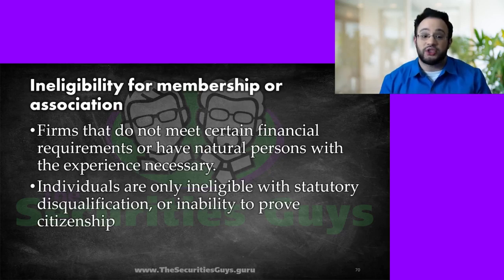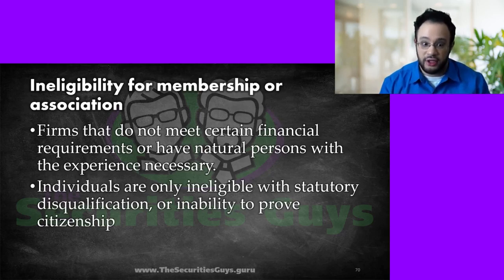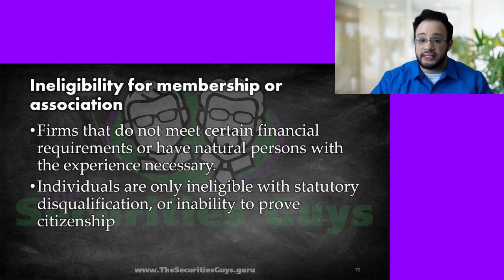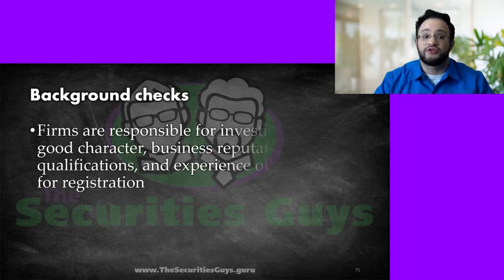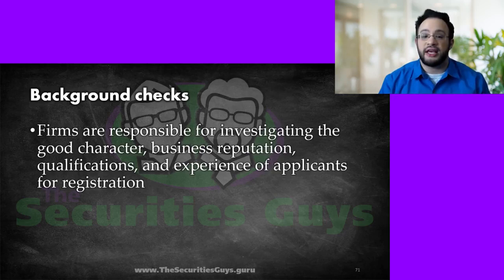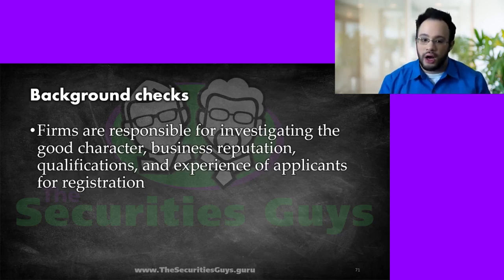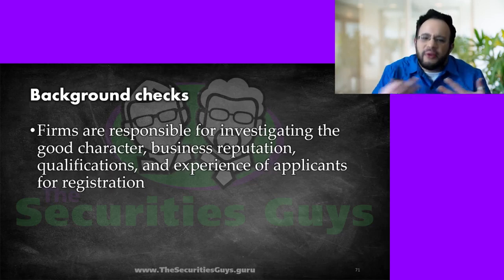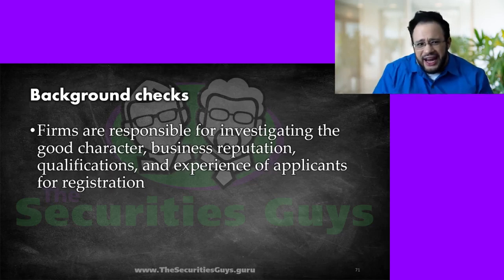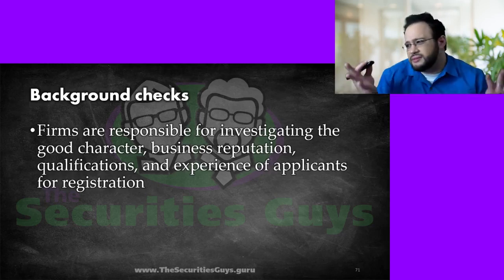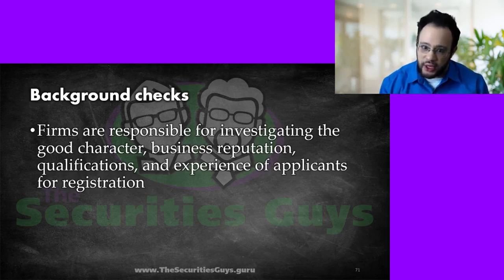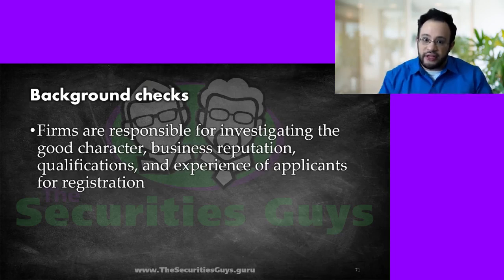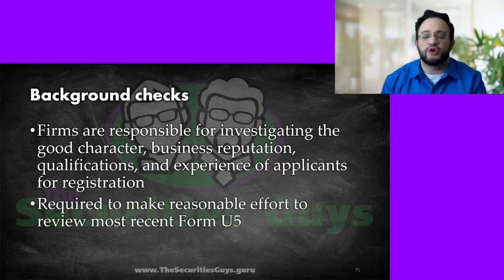Individuals are only going to be ineligible due to statutory disqualification — things like a felony in the past 10 years, a misdemeanor involving money, lying on the application, or inability to prove citizenship. You have to be a U.S. citizen to be a registered representative. Background checks are going to be performed, because firms are responsible for investigating the good character, business reputation, qualifications, and experience of applicants. It's not just simply passing a test. You've got to have good reputation and pass a background check, including a review of work history and where you've lived. They'll also make reasonable effort to review the most recent Form U-5.